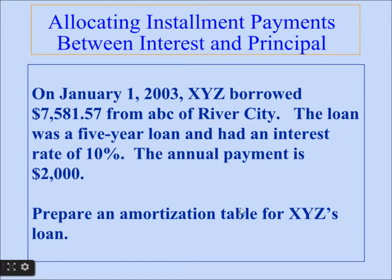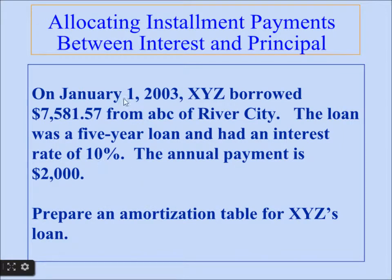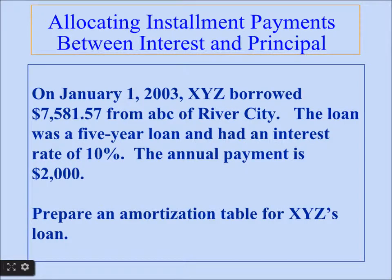Prepare an amortization table for the XYZ loan. Every year we are paying an annual payment of $2,000, and the interest rate is 10% of the principal. The total borrowed amount is $7,581.57, taken on January 1, 2003. So on January 1, we have an unpaid balance of $7,581.57. At the end of the year, December 31, 2003, we need to pay $2,000.